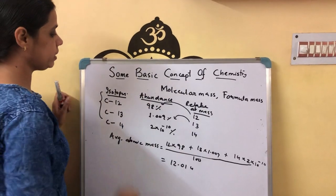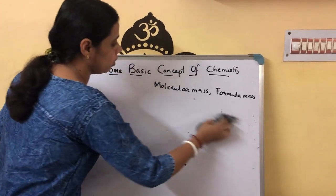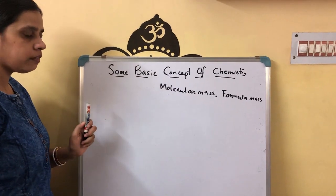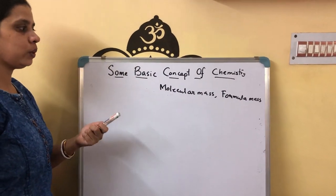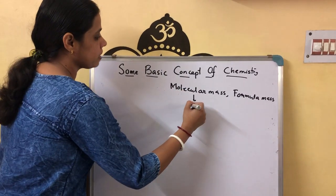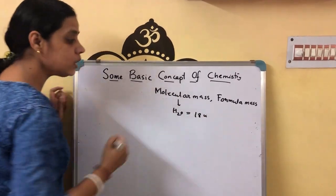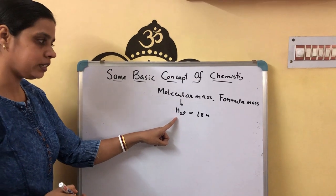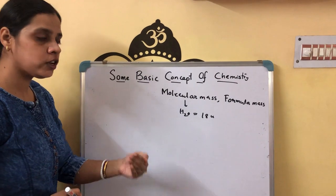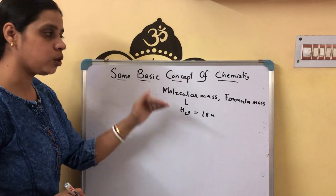Next, I will explain molecular mass. What is molecular mass? Like atoms, molecules are also very small, so we do not directly calculate their molecular mass. By taking the help of the AMU scale, we also calculate the molecular mass of a molecule. For example, if I take a water molecule, what will be the molecular mass of water? That is 18 U. That means one molecule of water is 18 times heavier than one-twelfth the mass of a C12 isotope. By this way, we calculate molecular mass.